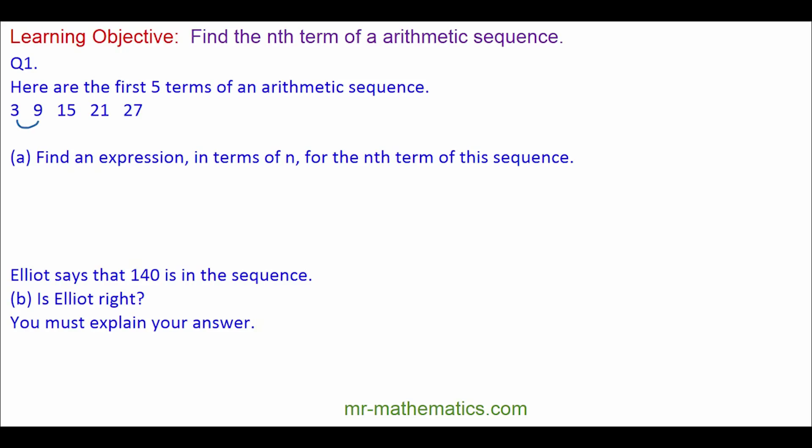We are going to find the nth term of this linear sequence. So the constant difference between each term is 6. 3 add 6 is 9, 9 add 6 is 15, 15 add 6 is 21 and 21 add 6 is 27.